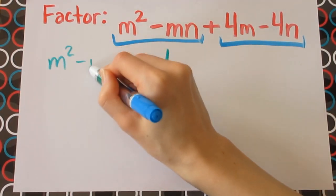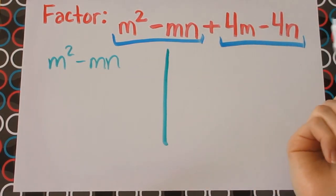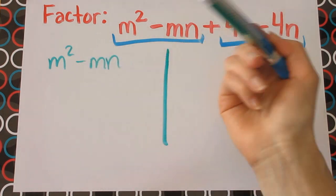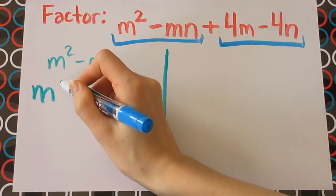Let's only look at m squared minus mn. So completely ignoring the other side, let's look for common factors between these two terms. We can see that there's an m in both of the terms and there's nothing really else we can take out.